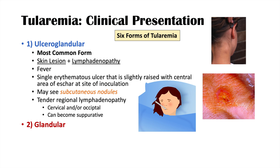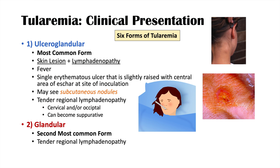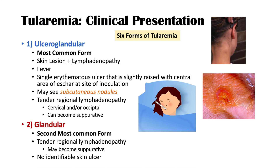The second form of tularemia is glandular, the second most common form. There is tender regional lymphadenopathy, very similar to the ulceroglandular form, and these lymph nodes may become suppurative. However, there is no identifiable skin ulcer. Lymphadenopathy is usually cervical, and an occipital tender lymph node may also be present.